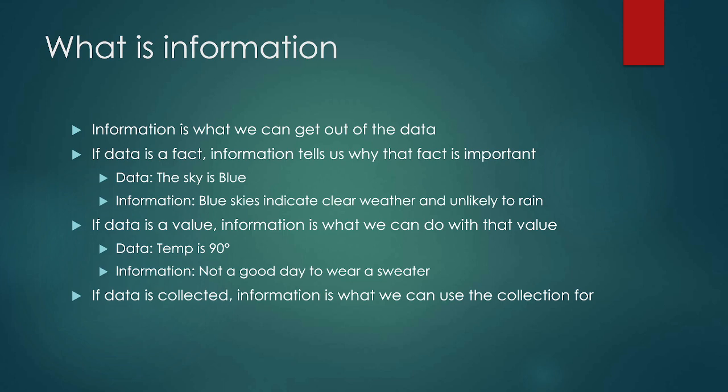Information is what we're actually getting out of the data. So let's say for example my data is that the sky is blue. I have collected this data by going outside, looking up at the sky, and deciding it's blue. The information that I get from this data is that blue skies likely indicate clear weather and are unlikely to rain — unless you live in New England of course. The difference is data just is a piece of fact, whereas information is something that we could infer or get out of the data.